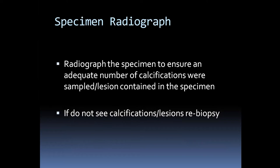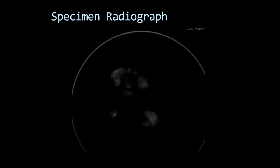After the biopsy, a specimen radiograph is obtained to confirm adequate sampling — ensuring an adequate number of calcifications is present. Calcifications are easy to confirm on specimen radiograph, whereas masses done under stereo are harder to confirm. If calcifications are absent or insufficient, the area can be re-biopsied. This is an example of a specimen radiograph showing cores of tissue in a petri dish with calcifications visible within them.